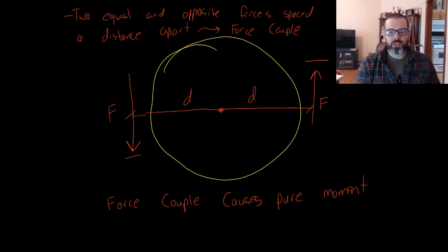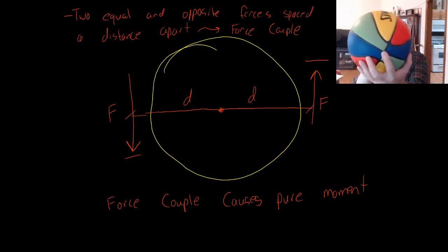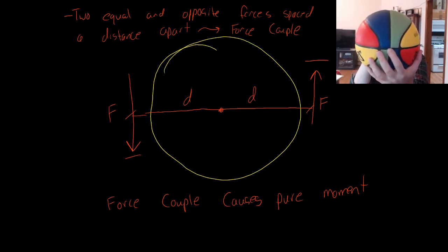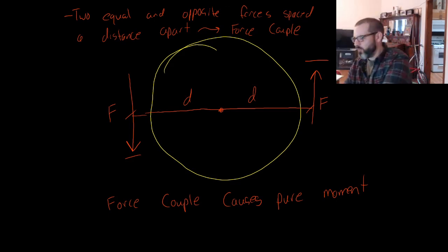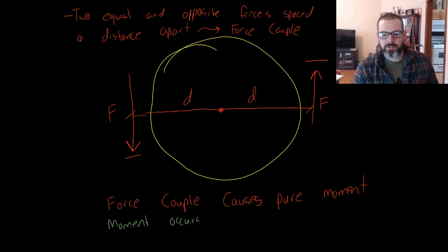So, when I tried to show you the basketball spinning around its center point, which would be about right there. If I could put a perfect moment on this, it would spin. It wouldn't translate up and down. And it would spin around that center point, 90 degrees to where the force couple occurs. We say that basically the moment occurs at 90 degrees to the force couple.